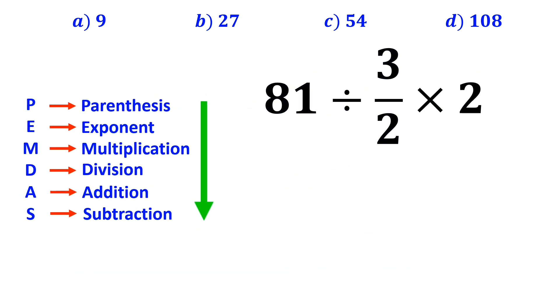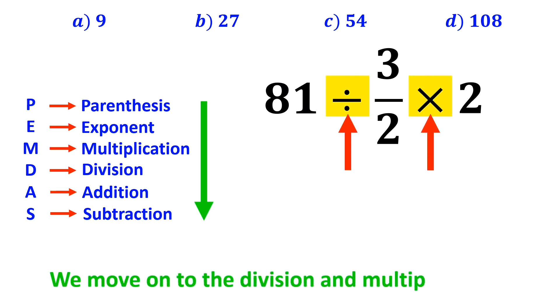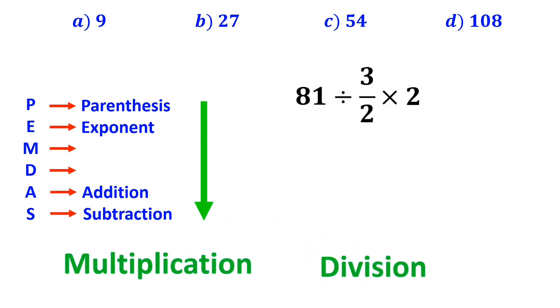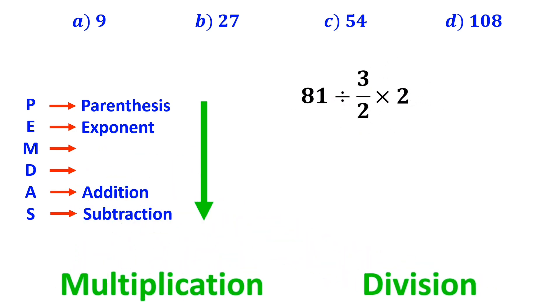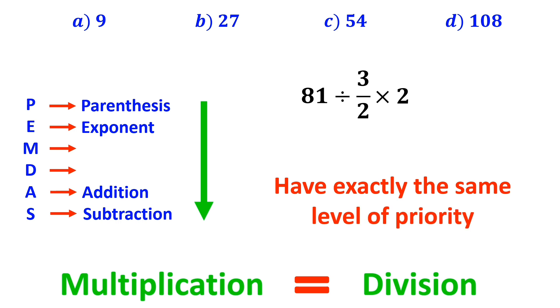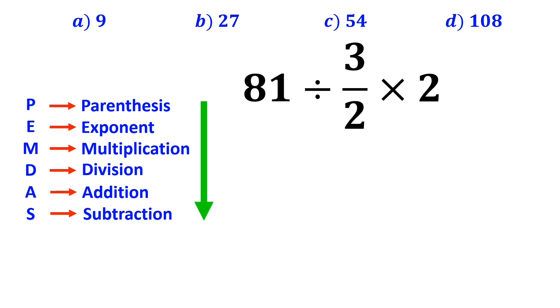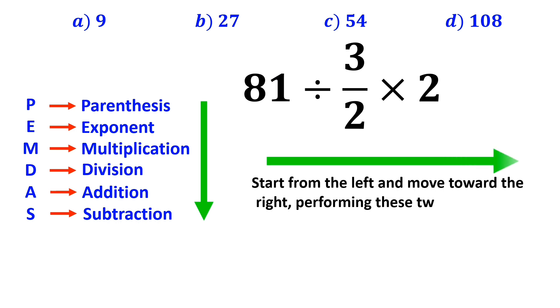In the next step, we move on to the division and multiplication. However, it is very important to note that multiplication and division have exactly the same level of priority in the PEMDAS rule. In this situation, the best approach is to start from the left and move toward the right, performing these two operations in order.